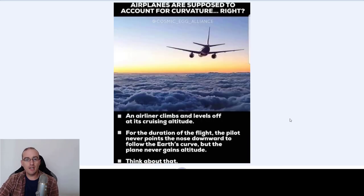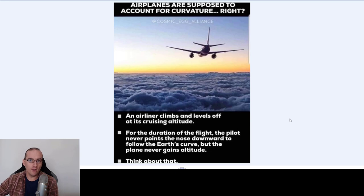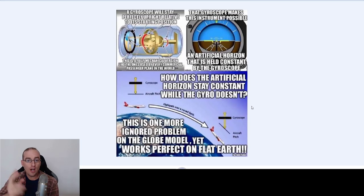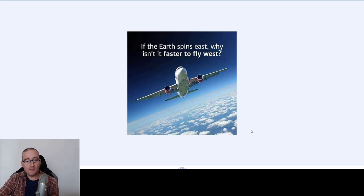So airplanes are supposed to account for curvature, right? Of course — don't blame the pilots. Pilots study very hard, they get a super salary for their career. Do you think they would risk their career to be called crazy and go wash dishes in a restaurant, or be homeless on the streets of LA or New York or Tokyo or London? No. The gyroscope — the artificial horizon — you can pause the video and look at the picture of the spinning ball with curved water and the plane going downward. Illuminated mind.